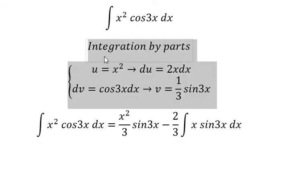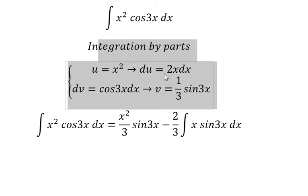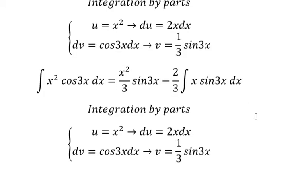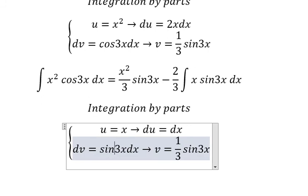But now this one should be u. The integration of this one, you got du. This one should be sin 3x. The integration of this one, we have negative 1 over 3 cos 3x.